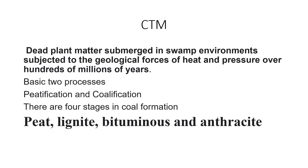Coal formation: dead plant matter submerged in a swamp environment is subjected to the geological forces of heat and pressure over hundreds of millions of years. That is why we say it is a non-renewable source of energy. The basic two processes for formation of coal are peatification and coalification. There are four stages in coal formation. The first is peat — formation takes place by bacterial decomposition and some fungi, where humification also takes place.